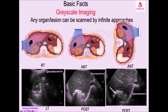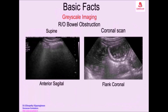Then you see right and left, and you see gas is anterior — with shadowing — and fluid is posterior with enhancement. What I have done is a coronal scan from the flank, because the gas will be going to the non-dependent part, which is the anterior part.